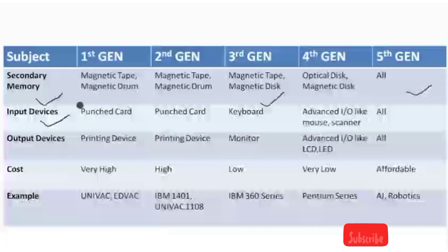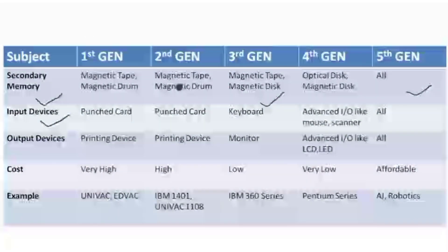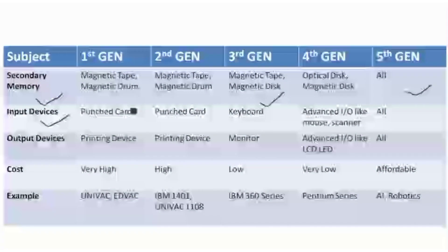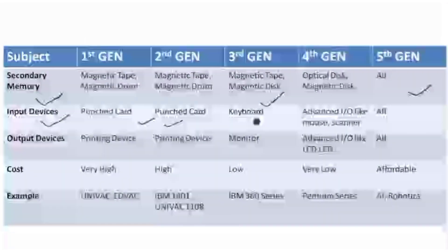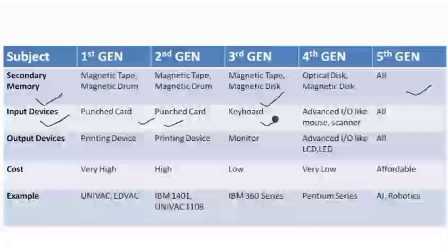Next is input devices. In the first generation and second generation we used punch cards — small cards on which data was punched in to feed as input. In the third generation we started using keyboards; mice were not used — data was input via keyboard since command-line interfaces were used. In the fourth generation, GUI (Graphical User Interface) became popular, so advanced input devices such as mouse and scanners started being used.